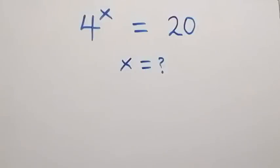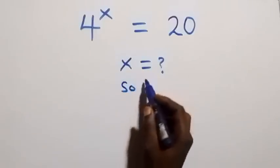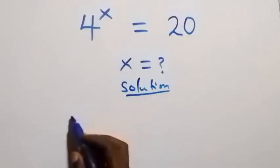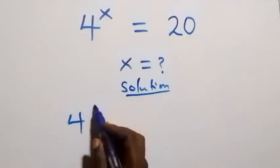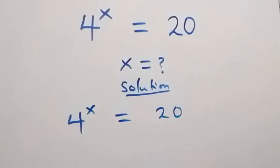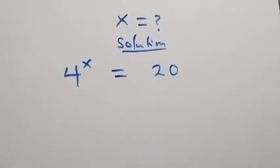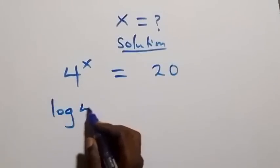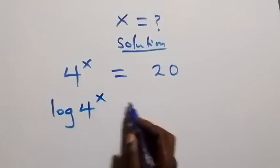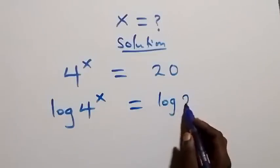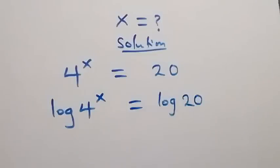Hello, you're welcome. We are going to solve this nice exponential equation. We are given 4 raised to the power x equals 20. To solve this, let's take the log on both sides: log of 4 raised to power x equals log of 20.